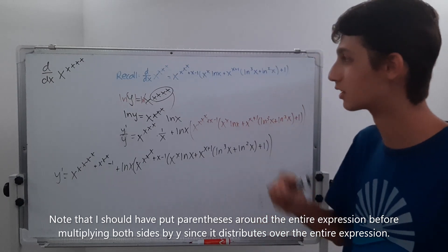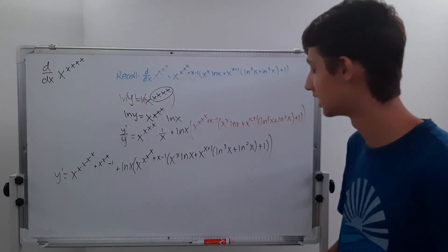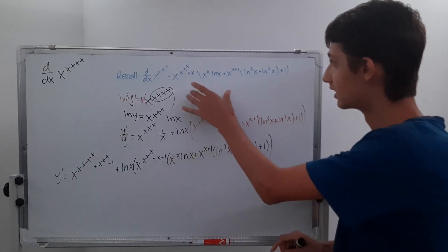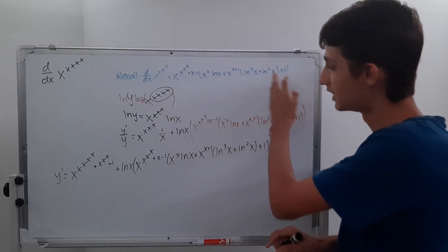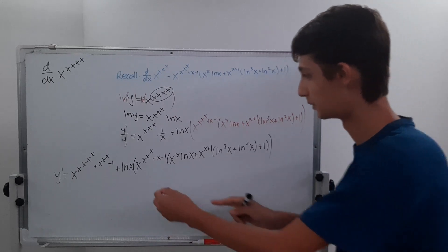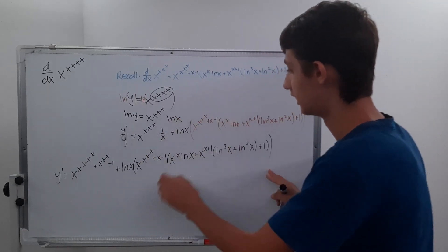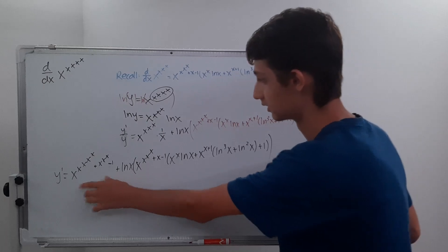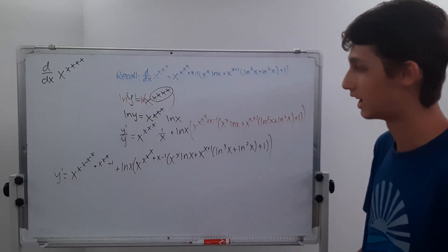Yeah, that's the derivative of the fifth tetration of x. Compared to the fourth tetration result, it's really not that much more. All of this — that is that part — and we're just adding on these couple of extra terms, which isn't really that much.